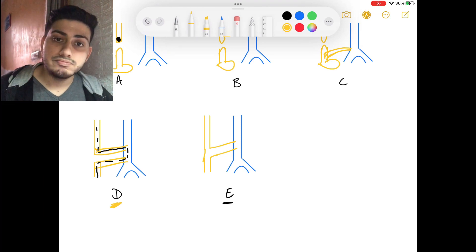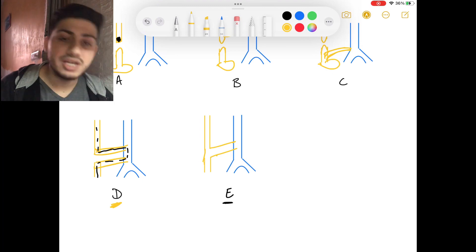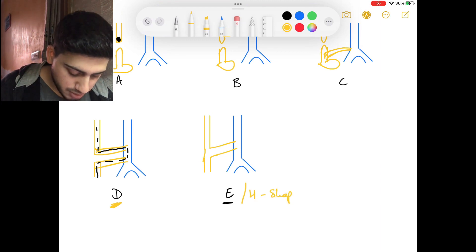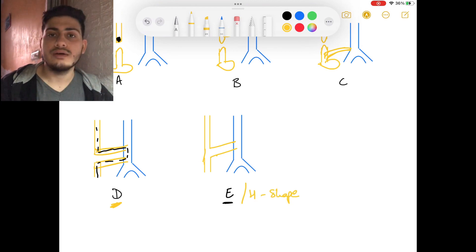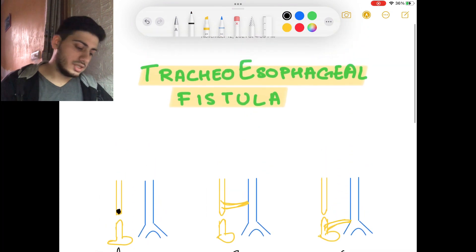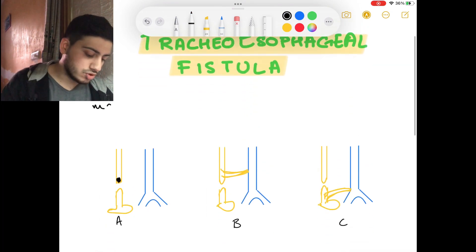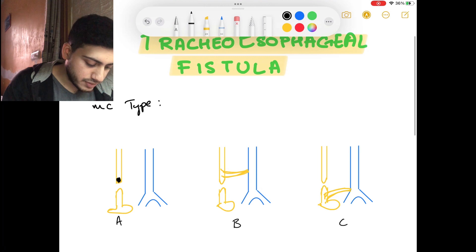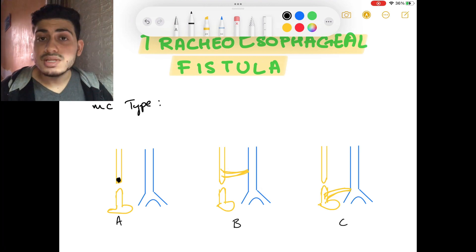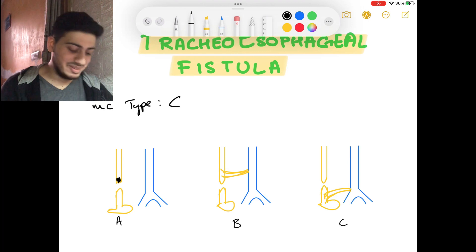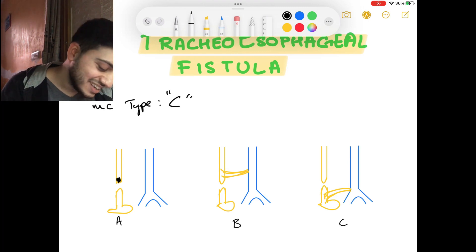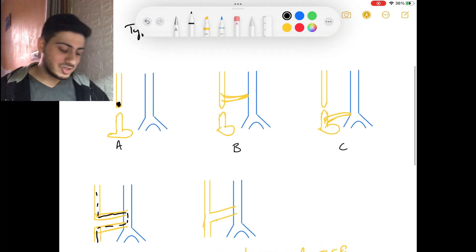Here we are looking at E-type. It is not atresia, it is just fistula between trachea and esophagus. And we call it H-shape. I am writing H-shape. This is not part of the mnemonic, it's called E-type and H-shaped TEF. This is the most common type - tell me - I mean C. C-type is the most common type.